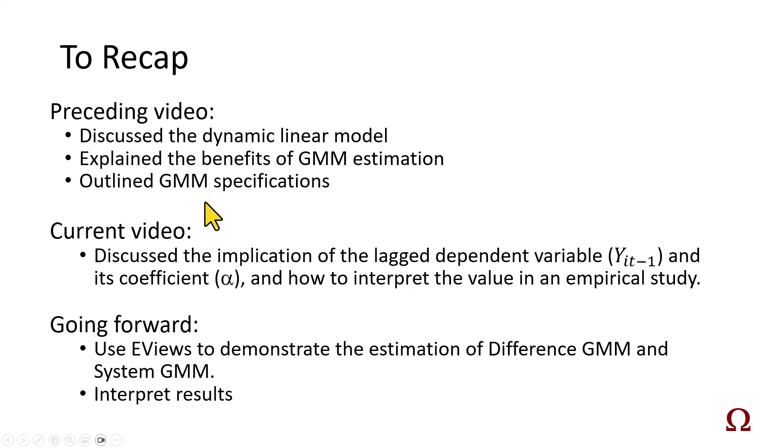So, to recap, in the video before this, I discussed the dynamic linear model, explained the benefits of GMM estimation, and outlined GMM specifications. In this current video, I've discussed the implication of the lagged dependent variable and its coefficient α, and how to interpret the coefficient value in an empirical study. Going forward, I'm going to use EViews to demonstrate the estimation of Difference GMM and System GMM, and interpret estimation results. So, stay tuned, and thank you.